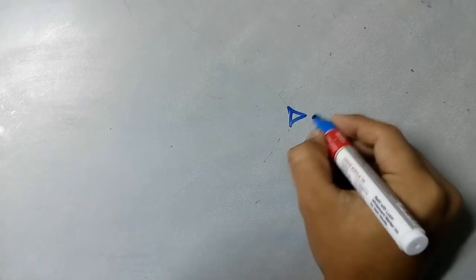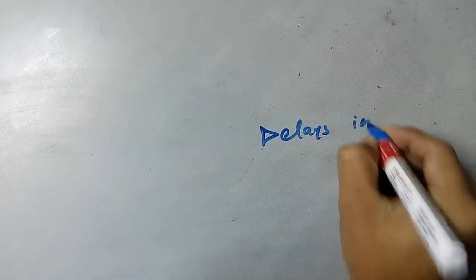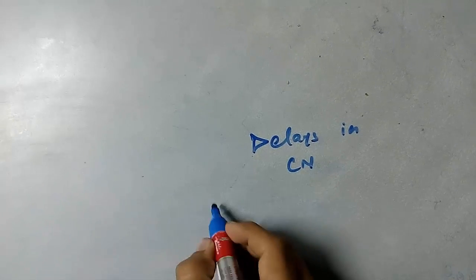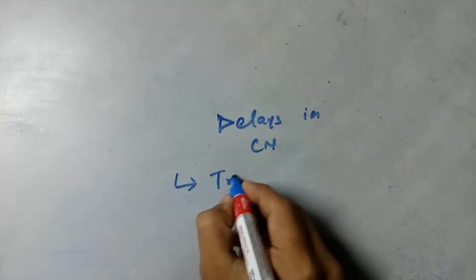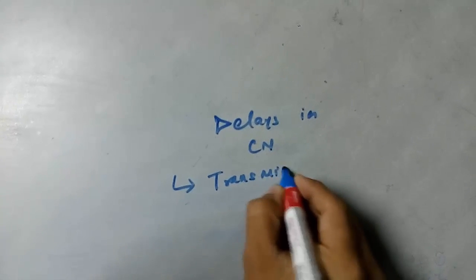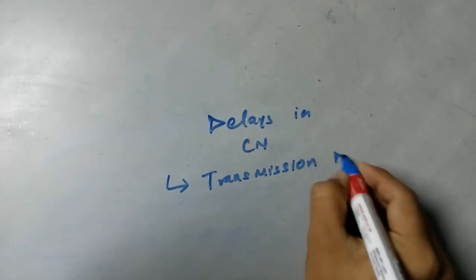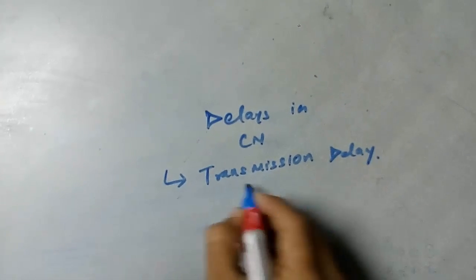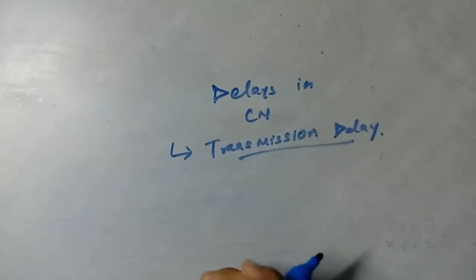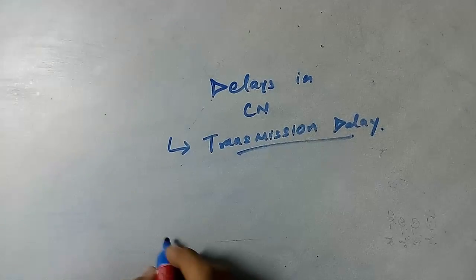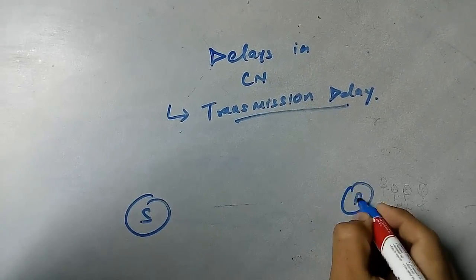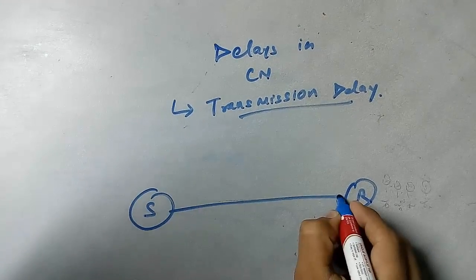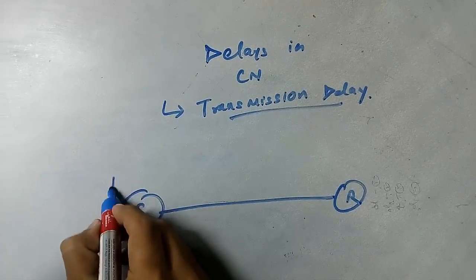Today we'll be talking about the delays in computer networks. There are four types of delays in computer networks. The first is transmission delay. Consider a topology where there is a sender, a receiver, and a communication link between them.